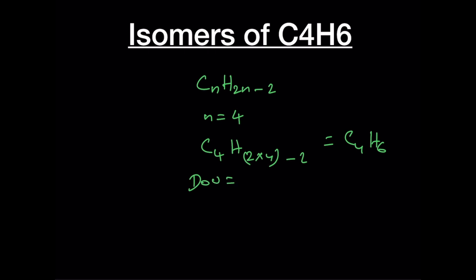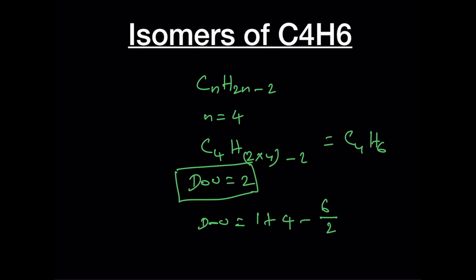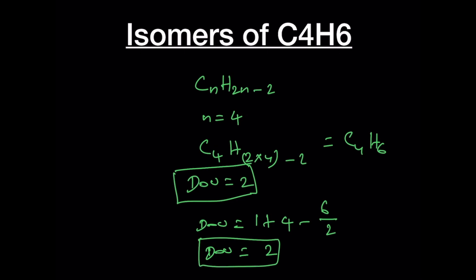This means the degree of unsaturation for this elemental composition is equal to 2. Let us verify: DoU equals 1 plus the number of carbon atoms (4) minus the number of hydrogen atoms divided by 2, so 5 minus 3 equals 2.